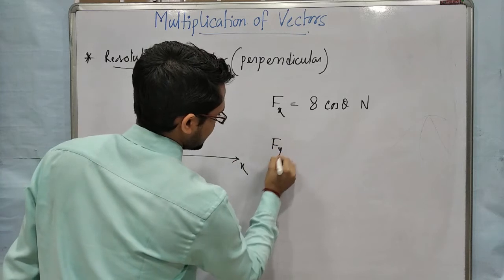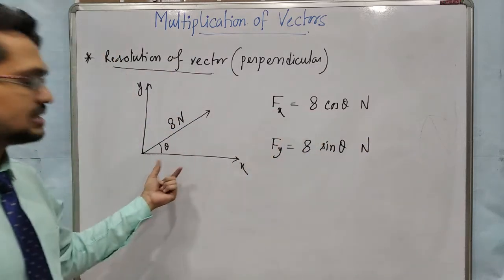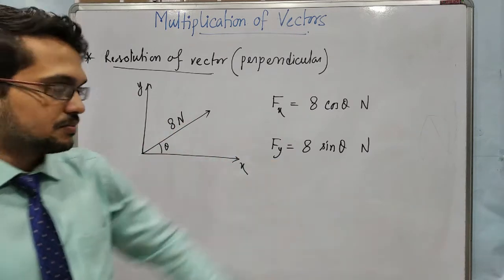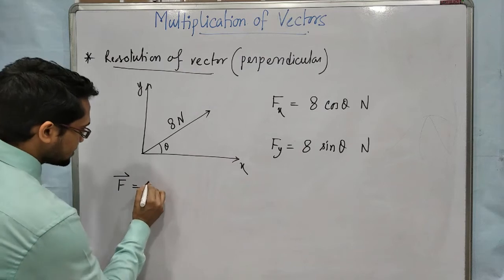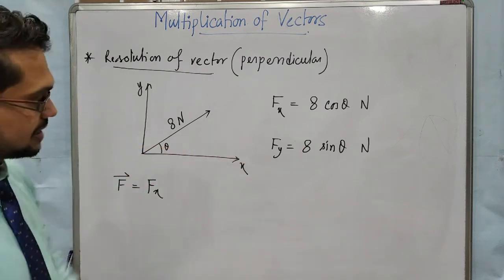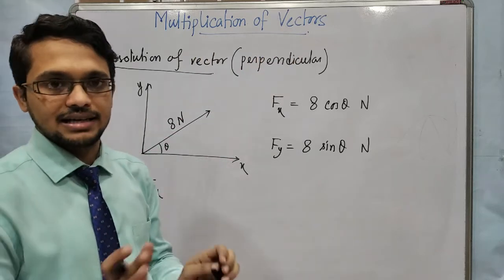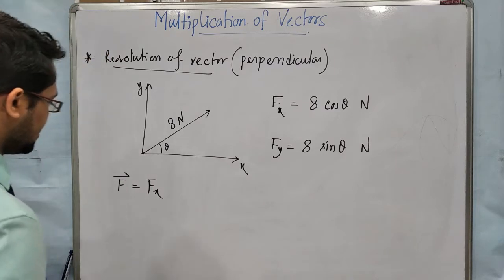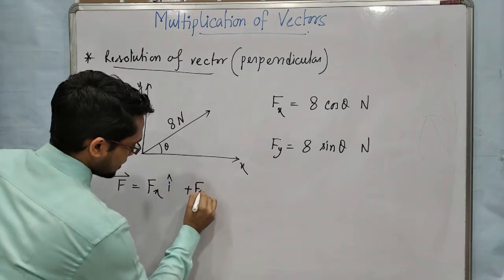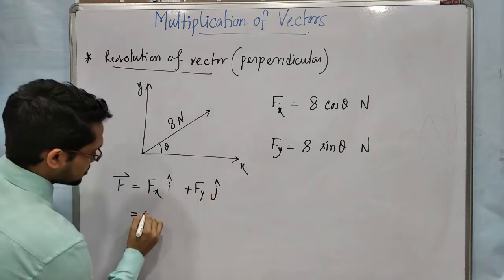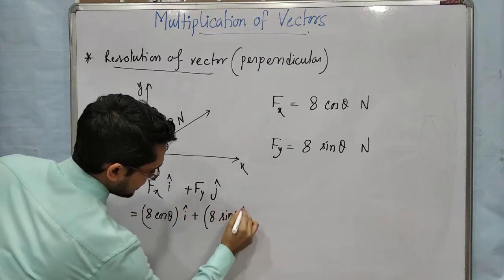And the y component, the perpendicular component, will be 8 sin theta. So which one is cos theta? The one with which the angle is given. And the other one will be the sin theta component. So this F vector can be represented as Fx i-cap plus Fy j-cap. Here we are introducing the unit vectors concept, because in multiplication of vectors — and also for addition and subtraction — I will tell how we can do it easily. So it will be 8 cos theta i-cap plus 8 sin theta j-cap.